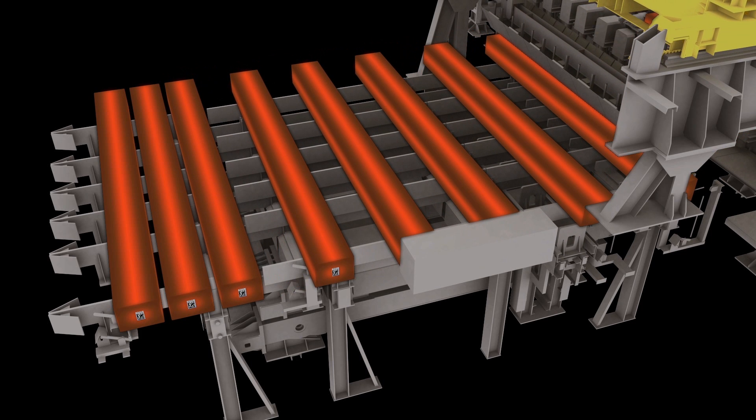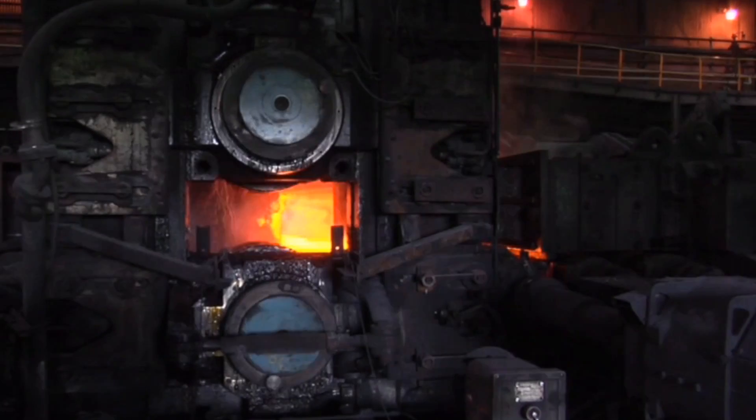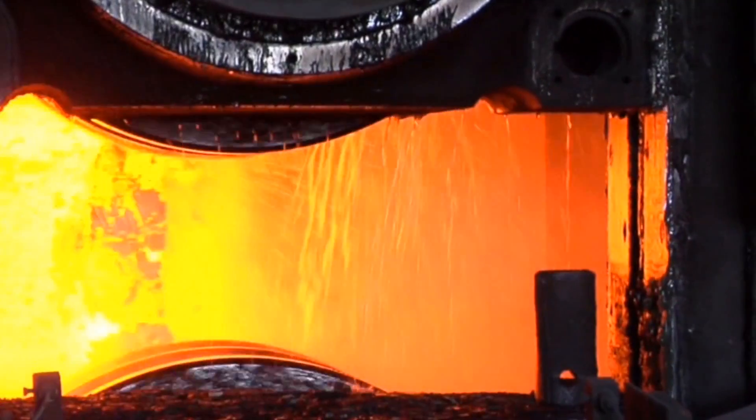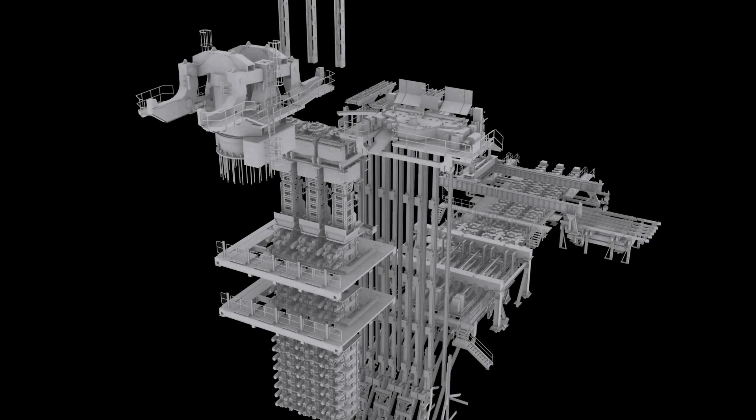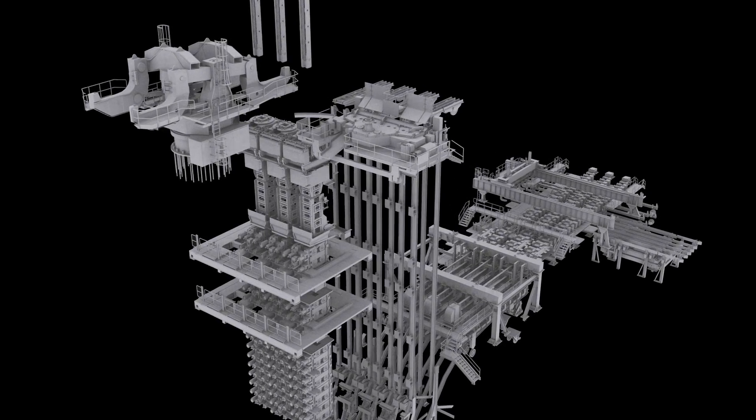Finally, we transfer the blooms to a large carrier stand. The bloom then transfers to the rolling mill, where we roll it into bar product. Now you know more about our jumbo vertical bloom caster.